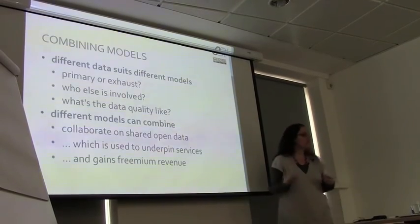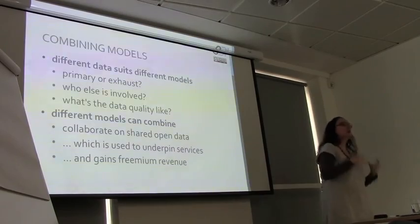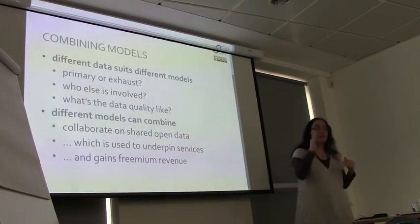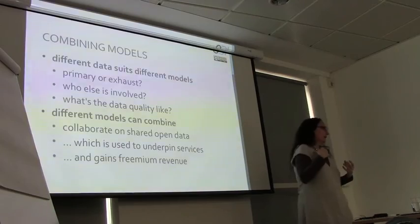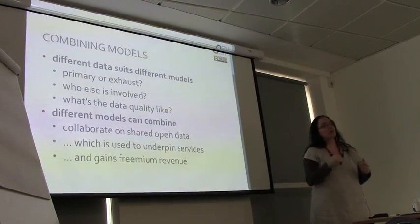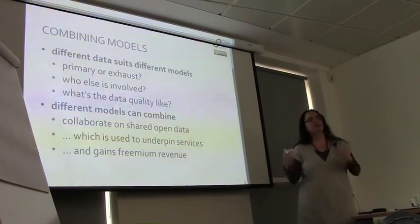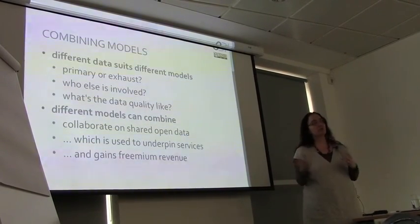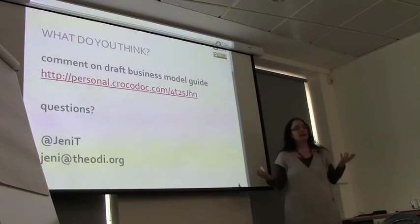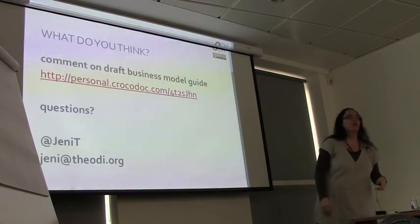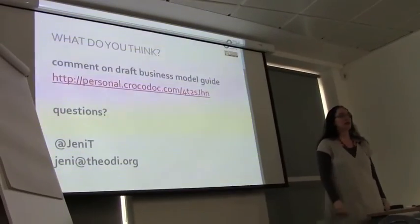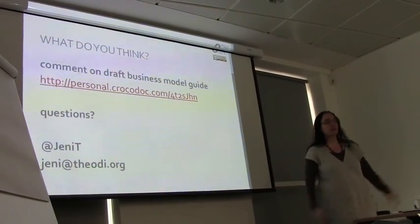The different models combine well. You can collaborate on shared open data which then underpins services that you offer and get paid for. You can collaborate to reduce your costs and inform better activities, which you then use to underpin paid services. And you can offer data as an on-ramp onto a closed, added-value level within a freemium model. The same data can be used in all those different ways. This has been a summary of a guide that we have — it would be great if you would go and look at it and comment on it afterwards.